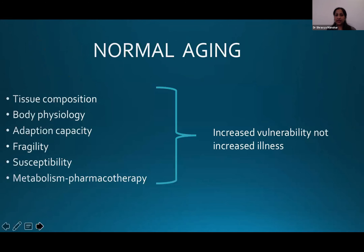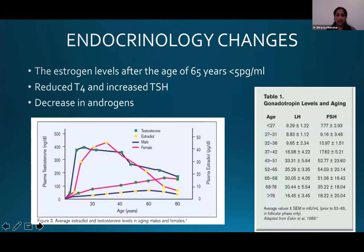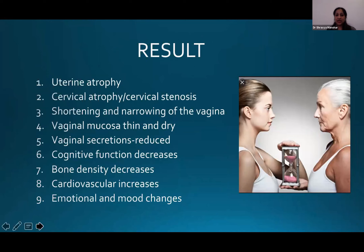These are all the things that occur during normal aging. This increases the population's vulnerability but does not increase their illness. There are various endocrinological changes that occur after the age of 65: estrogen levels going as low as less than 5, increased TSH, decreased androgens and estradiol with a small rise then a drop, and interestingly FSH levels rise in early menopause but fall back in late menopause. As a result, many changes occur in the body.